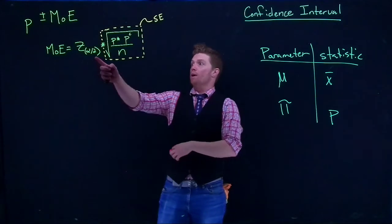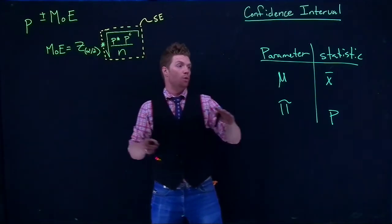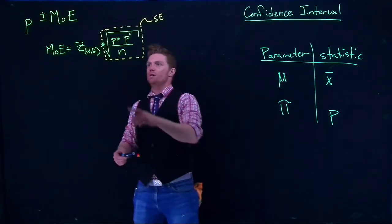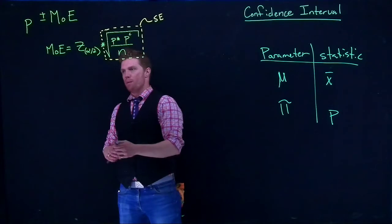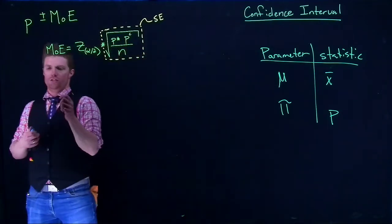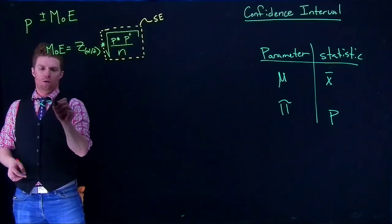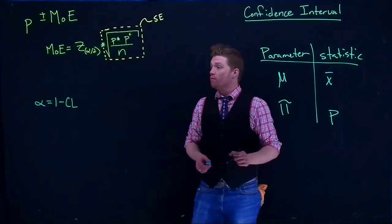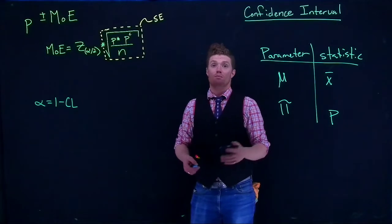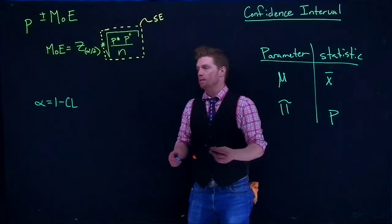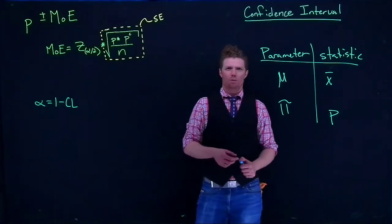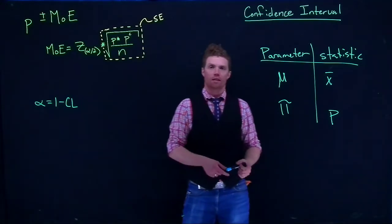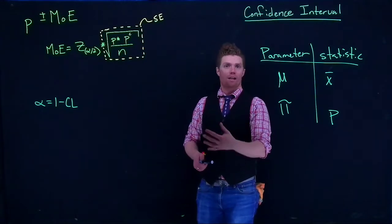We've already covered how to calculate this Z and it's the same between means or proportions. We still need to figure out our alpha, and remember that our alpha is still just one minus our confidence level. For our confidence level, remember that has to be given, oftentimes it's 95%, but it doesn't have to be. It could be 80% or 99%.